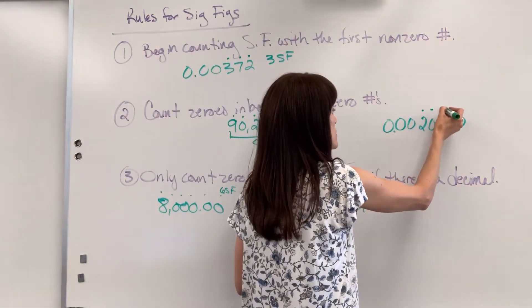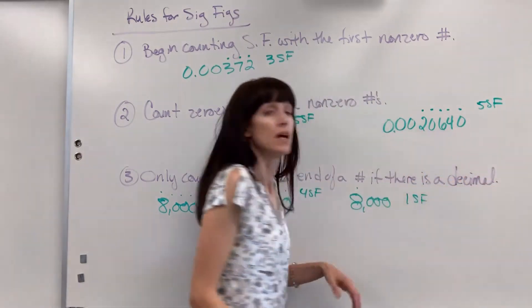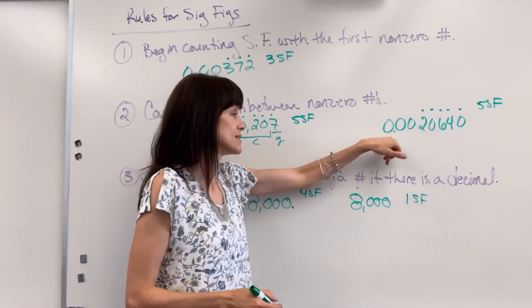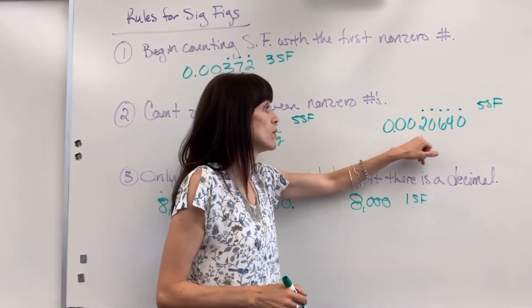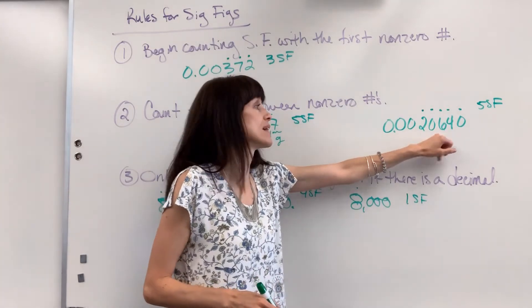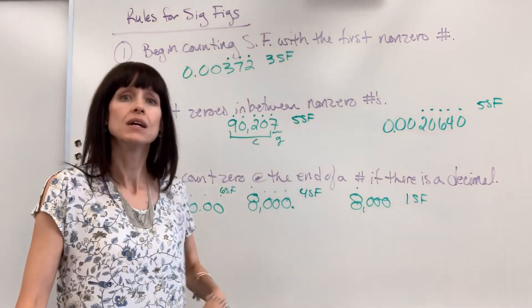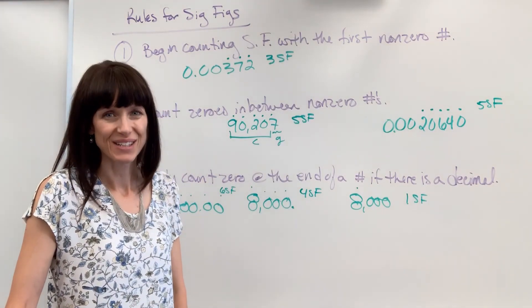Let me walk it out with you. We've got 1, 2, 3, 4, 5. Five sig figs. And let's review the rules. So I can't count the beginning zeros. I have to start with the first non-zero number. I can count the zero that's in between non-zero numbers. That's rule number two. Rule number three, I can count the zero at the end because there's a decimal. That is how you count significant figures.